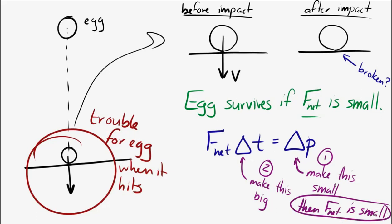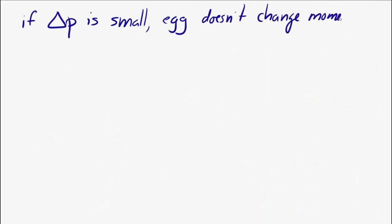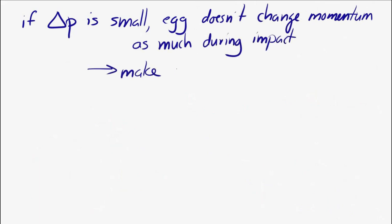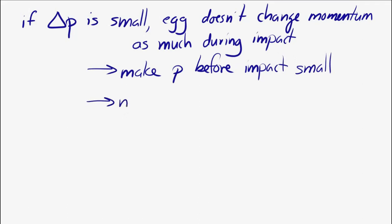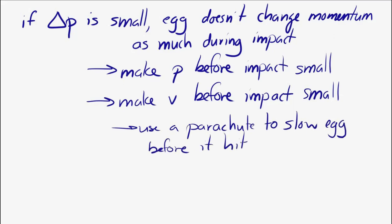To make delta p small, we want the change in the egg's momentum on impact to be as small as possible. The way to do that is to make sure the egg's momentum when it hits the ground is small — meaning its initial momentum should be small. We can't control the egg's mass, but we can control its velocity. So you'd add a parachute: air resistance reduces velocity, which reduces momentum, which reduces the change in momentum, and therefore the force.